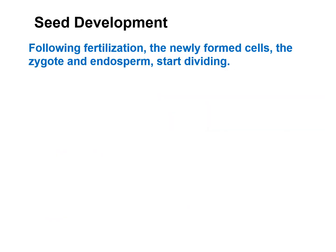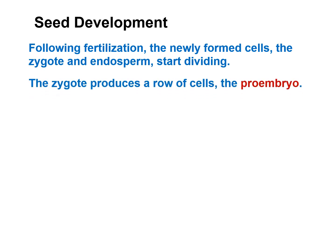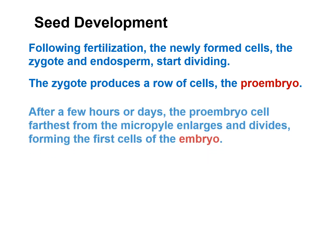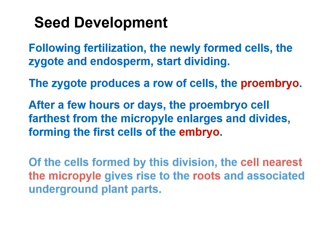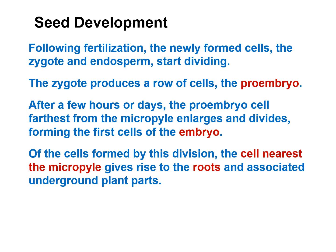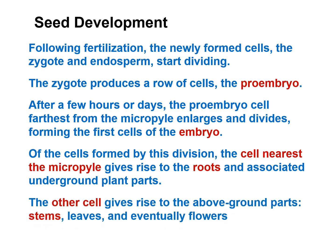Seed Development: Following fertilization, the zygote and endosperm start dividing. The zygote produces a row of cells called the proembryo. After a few hours or days, the proembryo cell furthest from the micropyle enlarges and divides, forming the first cell of the embryo. The cell nearest the micropyle gives rise to the roots and associated underground plant parts, while the other cells give rise to above-ground parts: stems, leaves, and eventually flowers.